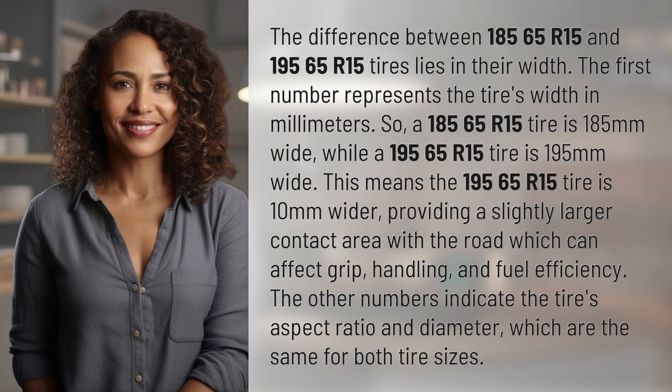The difference between 185/65R15 and 195/65R15 tires lies in their width. The first number represents the tire's width in millimeters, so a 185/65R15 tire is 185 millimeters wide, while a 195/65R15 tire is 195 millimeters wide.